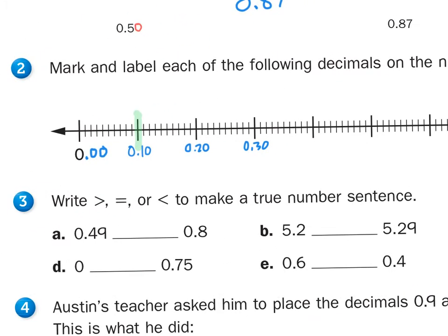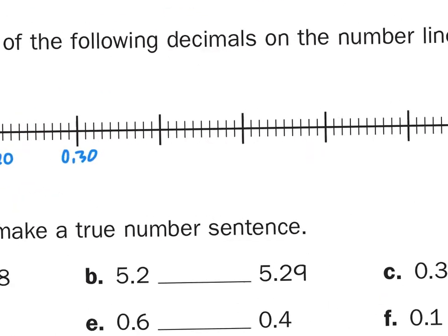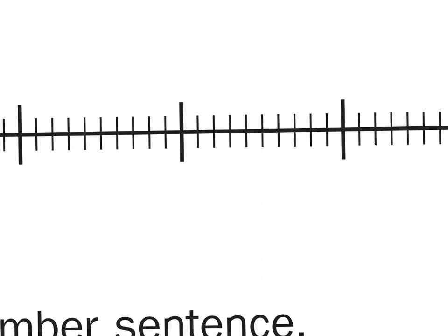So the first one I'm going to be filling in is 0.53. So, ten, twenty, thirty, forty, fifty. This one's fifty, fifty-one, fifty-two, fifty-three. So this right here would be 0.53. So I'll just shade that one in so it's easy to see.